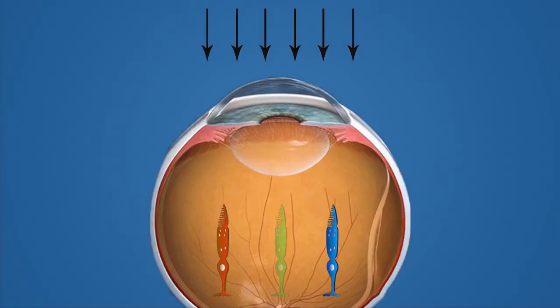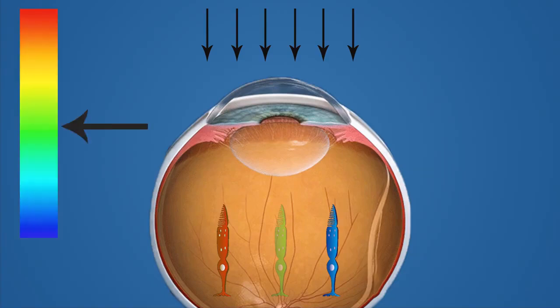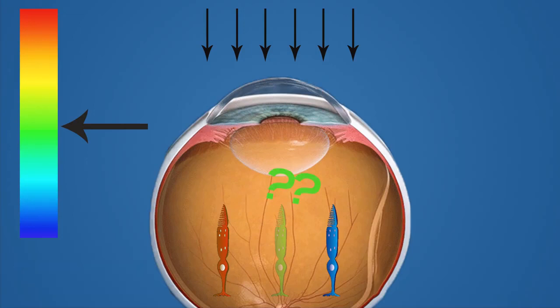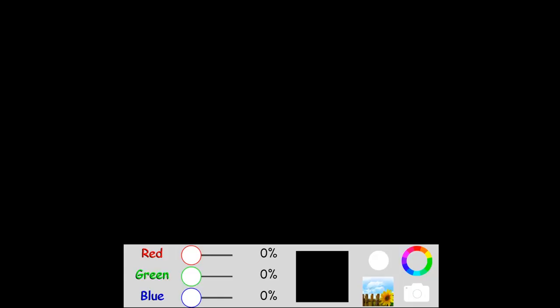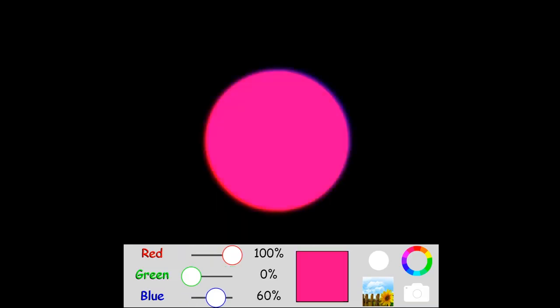Now let's get to the problem. When your red and blue cones activate, your brain, as usual, looks for the color between red and blue in the spectrum. And that color would be green. But the green cone cells don't detect any green light at all. In this case, in order to solve this paradox, your brain creates and imagines a new color — pink. And we can get this from the same simulation: when we have the red and blue cones activated, we get pink.